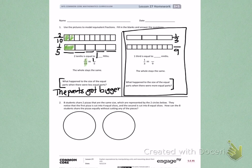Number two. Eight students share two pizzas that are the same size, which are represented by the two circles below. They notice that the first pizza is cut into four equal slices, and the second pizza is cut into eight equal slices.